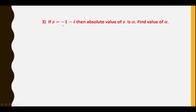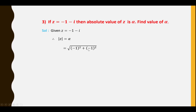Third question: If Z = −1 − i, find the absolute value α of Z. α = |Z| = √((−1)² + (−1)²) = √(1 + 1) = √2. Therefore the absolute value of Z is α = √2.